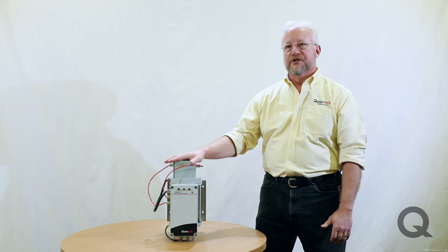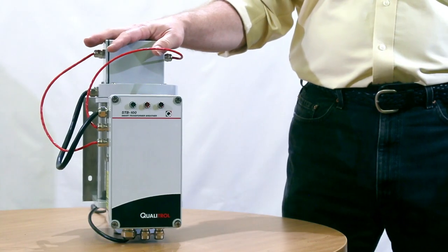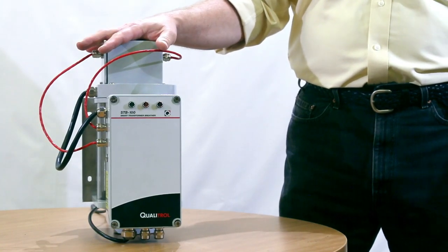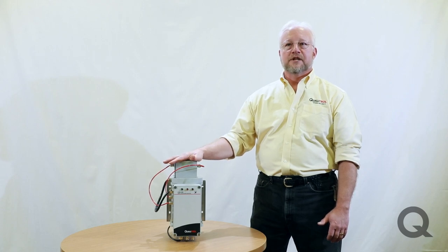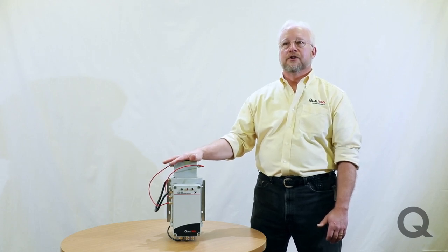There are basically three sizes of the smart breather. This is the baby one, the STB100. This can be used on either a load tap changer tank or a small conservator tank.